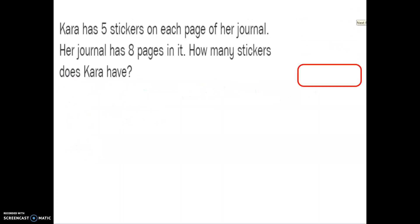Last one. Kara has 5 stickers on each page of her journal. Her journal has 8 pages in it. How many stickers does Kara have? Remember, we're going to read the problem once, twice, 500 times until we know what we're being asked to do. So, what do we know? Kara has 5 stickers on each page. This is an important word. It's not saying she just has 5 stickers. It's saying she has 5 stickers on each page of her journal. Her journal has 8 pages in it. How many stickers does Kara have? So, we need to find out how many stickers Kara has all together.